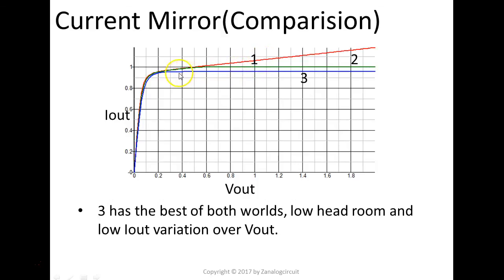Essentially, you see that number three, the Iout is very flat when compared with number one. Also, the drop-off region for number three is a lot lower. When compared with number two, it starts dropping off around 0.6 volts, while number three has the drop-off around 0.2 volts.